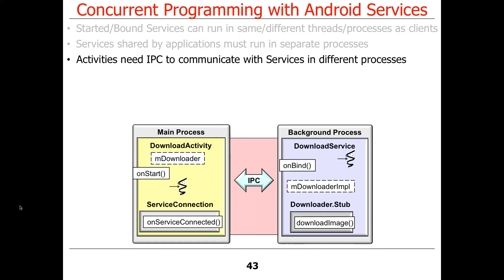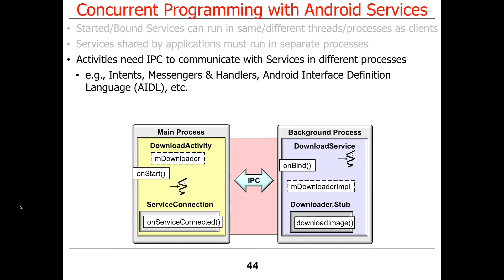When things are separated into different address spaces, you need a way to communicate between them. In assignment four, you'll work with intents, messengers and handlers — which are ways to communicate messages across process address boundaries — and later the Android Interface Definition Language (AIDL), which translates method calls automatically via the Android AIDL compiler and the binder framework into low-level remote procedure call operations across address spaces. The magic underlying all of this is called the Android Binder.